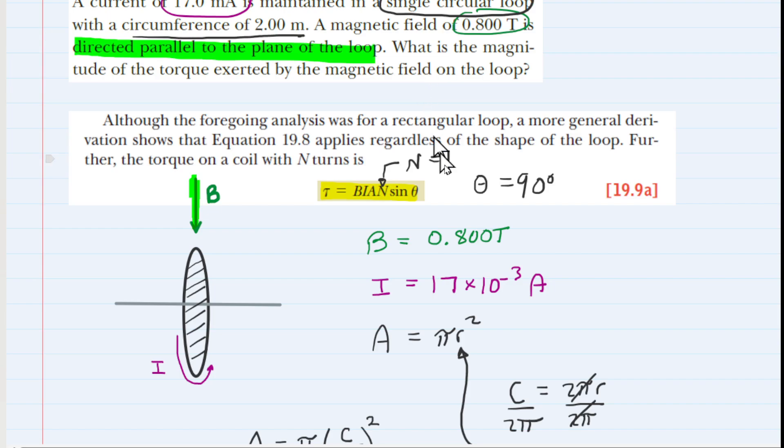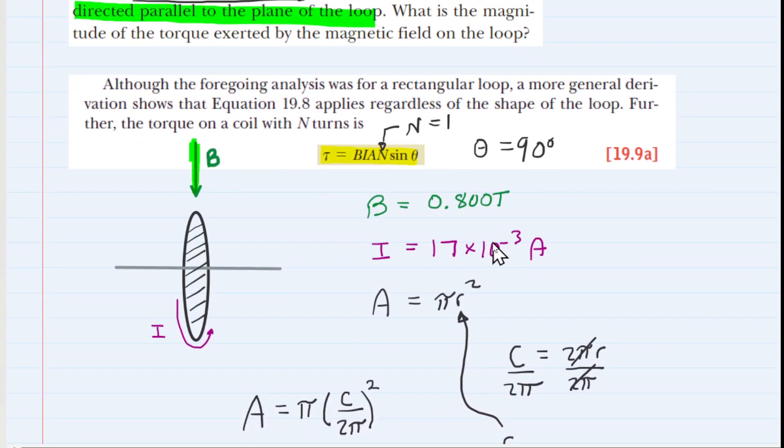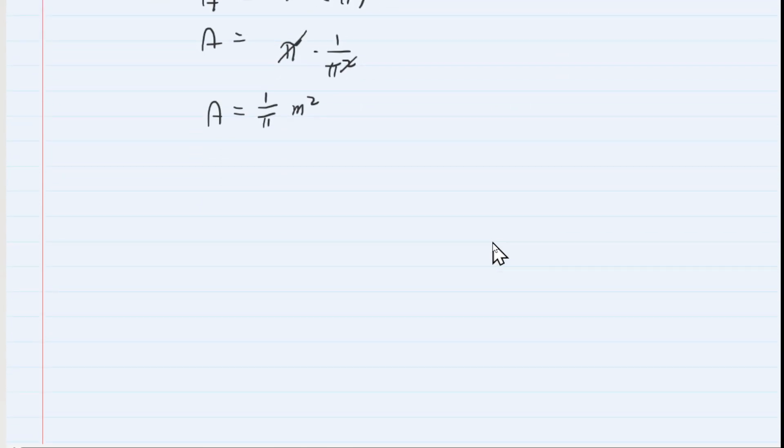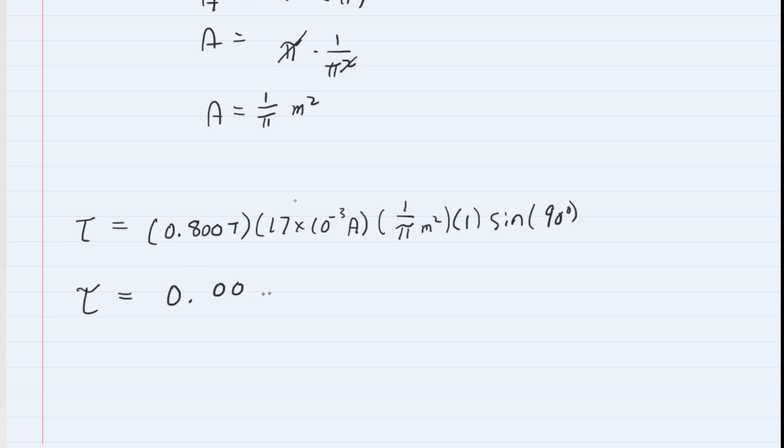Now we're ready. We can plug in all of the given information and calculate the torque acting on this current-carrying loop. There we have the numbers plugged in. Make sure your calculator is set to degree mode. When you calculate this torque, you'll end up with 0.00433, and the standard unit of torque is a newton multiplied by a meter.